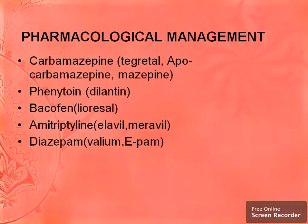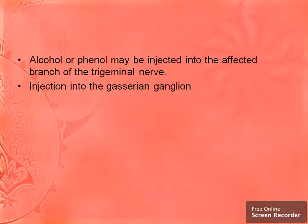In pharmacological management, we give carbamazepine or Tegretol, phenytoin or Dilantin, baclofen, amitriptyline, and diazepam. Alcohol or phenol may also be injected into the affected branch of the trigeminal nerve or into the Gasserian ganglion.